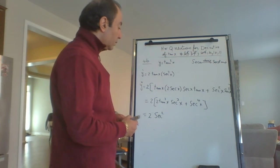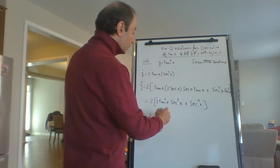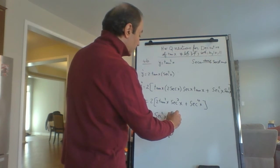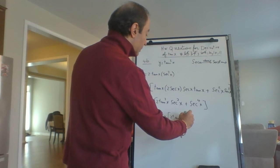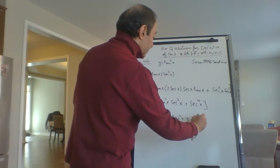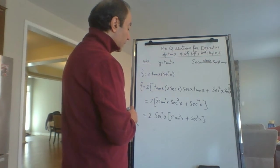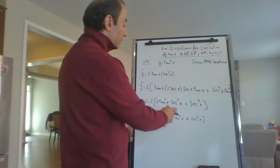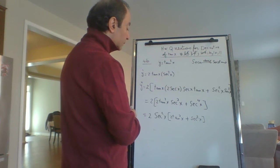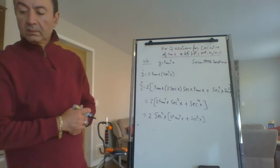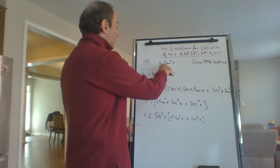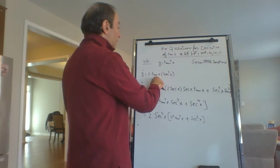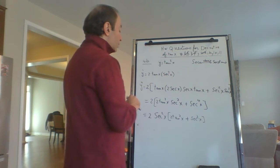I will continue with that question. I will factor secant squared x out, and that will give us tan squared x plus secant squared x. I can leave it this way or I can make this sine over cosine — I'd rather leave it like that. So what I did is: the derivative of y equals tan squared x is 2 tan x times the derivative of tan, which is secant squared.